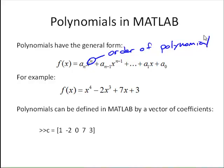For example, we might have a fourth order polynomial: x to the fourth minus 2x cubed plus 7x plus 3.